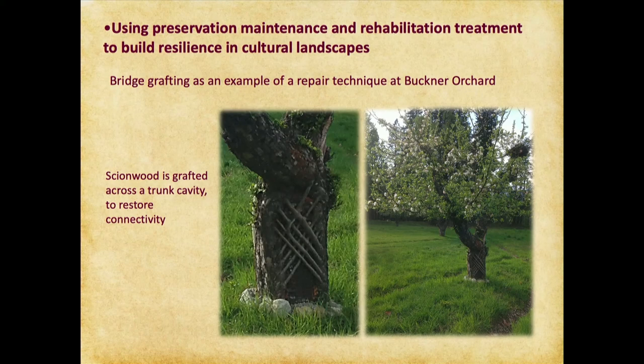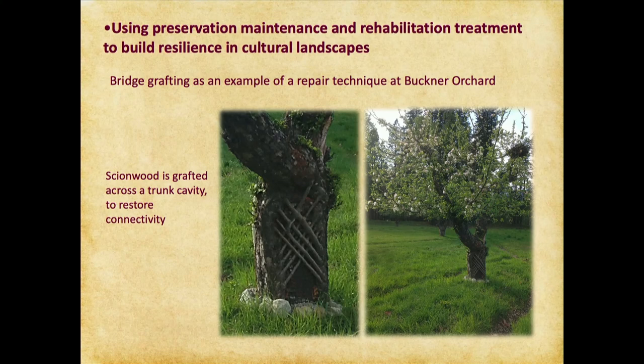One example of repair: bridge grafting is a repair technique at Buckner Orchard. The standards say it's better to repair than replace. A historic fruit tree with a cavity can be repaired by this bridge grafting technique — an ancient technique where you take shoot growth from the canopy, the scion wood, and graft it across the cavity so that eventually it merges and restores connectivity from the scion to the rootstock.